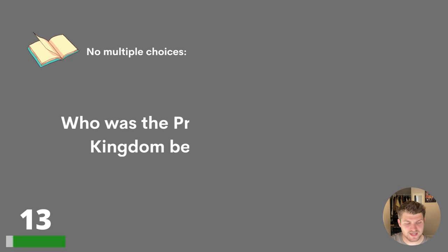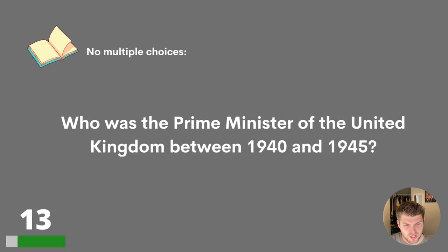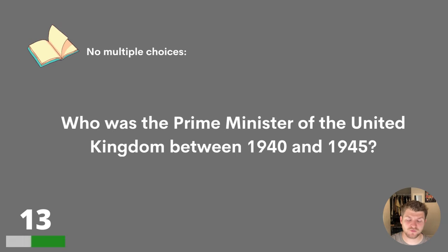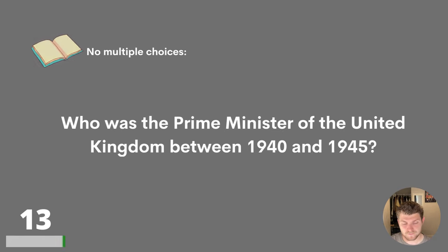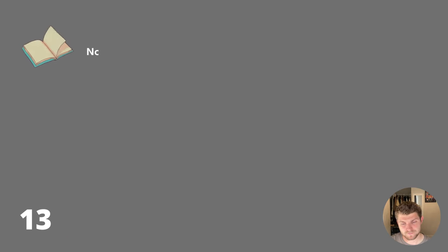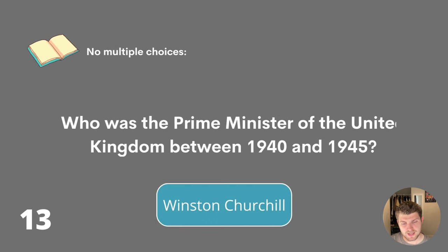Question thirteen. Who was the Prime Minister of the United Kingdom between 1940 and 1945? There are no multiple choices for this question. The answer is Winston Churchill.